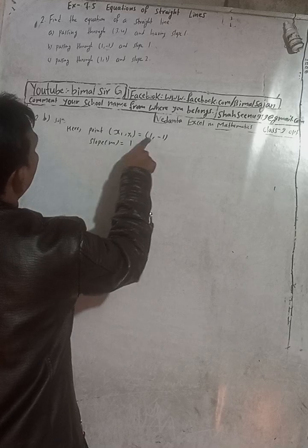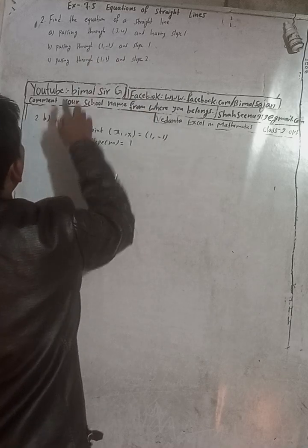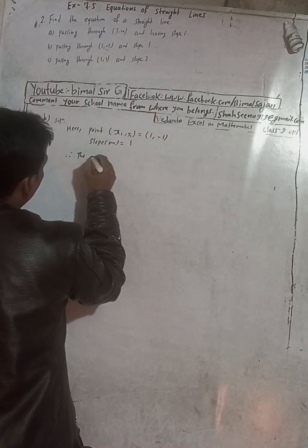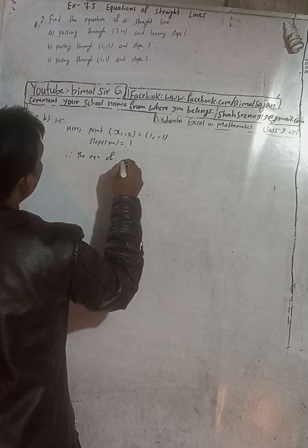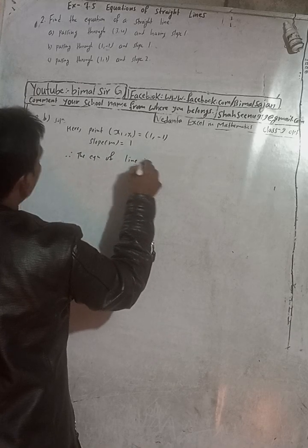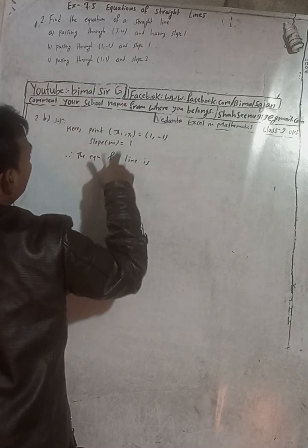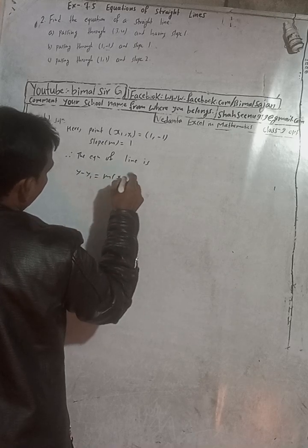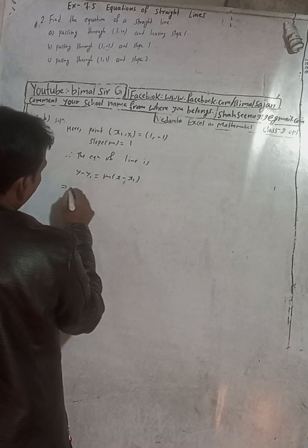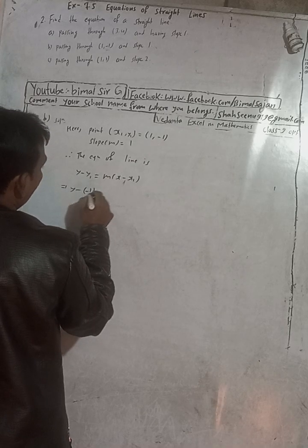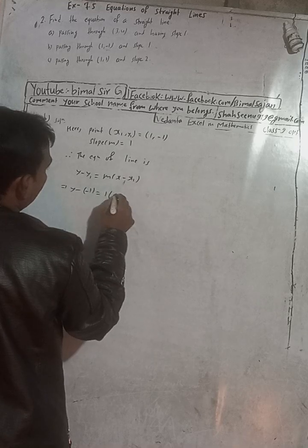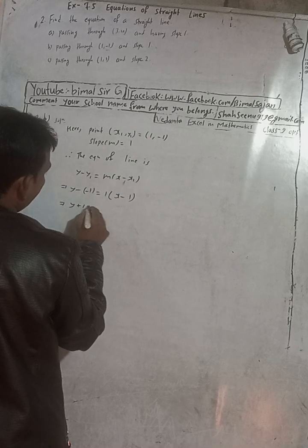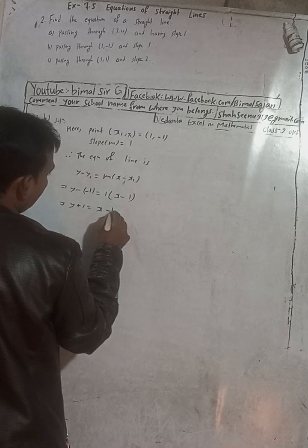Here the point for part (b) is (1, -1) and slope is 1. Therefore the equation of line is given by y minus y1 equals m into x minus x1. Substituting: y minus y1, where y1 is minus 1, so we put y minus (minus 1) in brackets, equals m which is 1 into x minus x1, where x1 is 1.